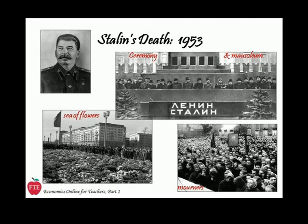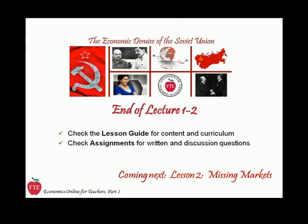Stalin died in 1953, a hero in the Soviet Union and an imposing figure on the world stage. As the USSR entered the 1950s, communist power was secure and the Empire was poised for a period of significant economic growth. In Lesson 2, we'll consider the mechanism of economic growth in this centrally directed economy, and look at the task of the production ministers, who had to direct the allocation of resources and output without the information and coordination that would have been provided by markets.